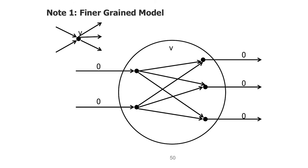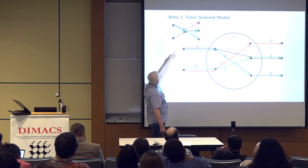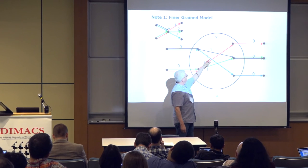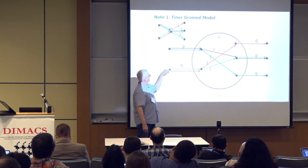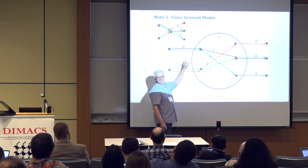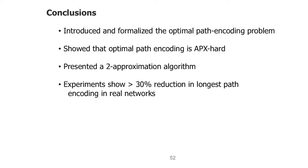Just a quick note: I think of this at a finer grain where a node was previously treated as a router, but I actually think of a router as a little network in itself — from input ports to output ports. If I look at the red, green, and blue paths and blow up the router, paths going from one input port to one output port may have a single arc with length zero, giving much smaller labelings at this finer scale. We introduced this problem, showed it's APX-hard, have a 2-approximation, and the gradient descent gives a 30% reduction.